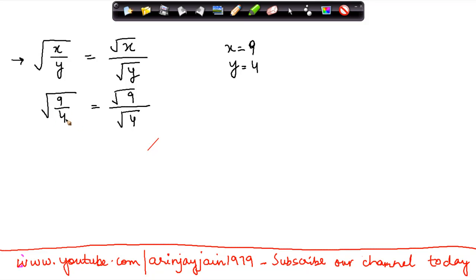Now under root of 9 divided by 4 can also be written as under root of 2.25, and this can also be written as under root 9 is equal to 3 and under root 4 is equal to 2, or this comes to 1.5.